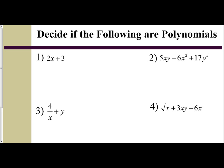So if we take a look, we have 2x plus 3. First thing I'm going to see is I do have my variable, it has a positive exponent of 1, and there's two terms. So this is a polynomial, and since there's two terms, it's considered a binomial.